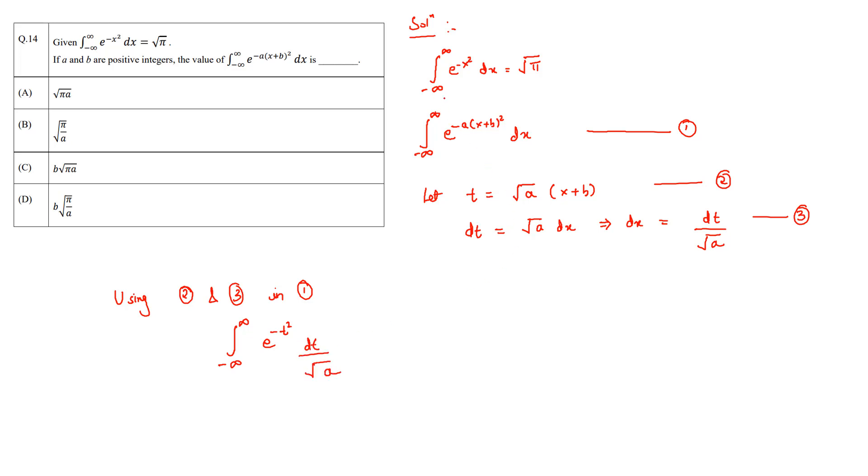But we have already seen that e raised to the power minus x squared dx is equal to root pi. So then we can take this 1 over root a outside and say that this is minus infinity to infinity e raised to the power minus t squared dt, which will be nothing but root pi. So this becomes root pi over root a.